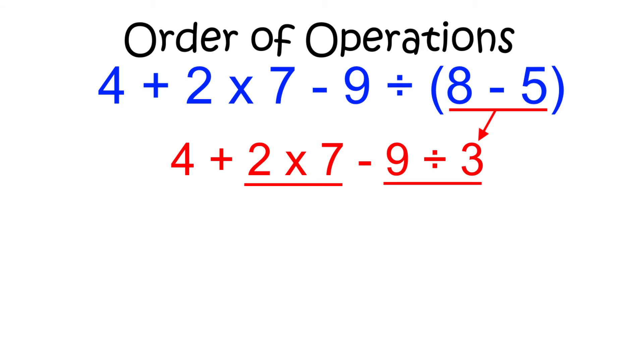Next, we work the multiplication and division from left to right. 2 times 7 is 14, and 9 divided by 3 is 3. Finally, we finish the problem by working the addition and subtraction from left to right.